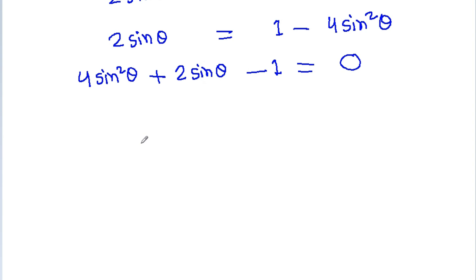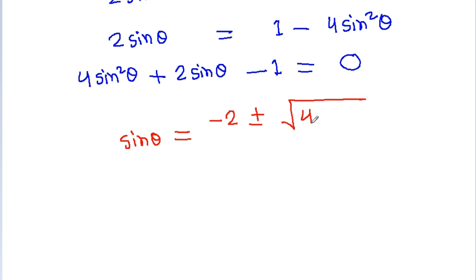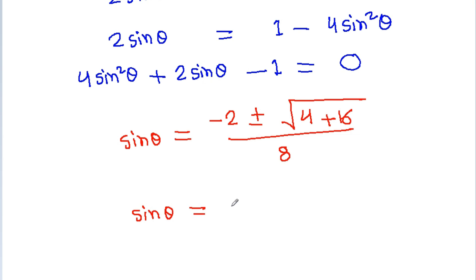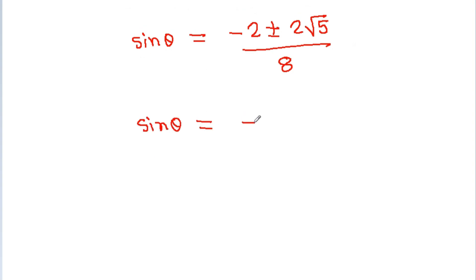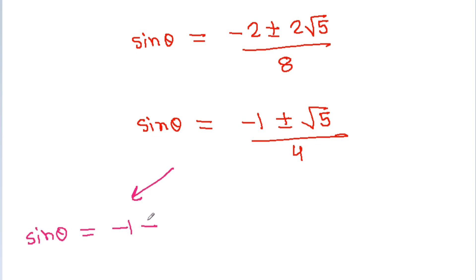Applying the quadratic formula, sin theta equals minus b, which is minus 2, plus or minus the square root of b² minus 4ac — that is, root of 4 minus 4 times 4 times (−1), which equals root 20, or 2 root 5 — all divided by 2a, which is 8. So sin theta equals (minus 2 ± 2√5) / 8, which simplifies to (−1 ± √5) / 4.